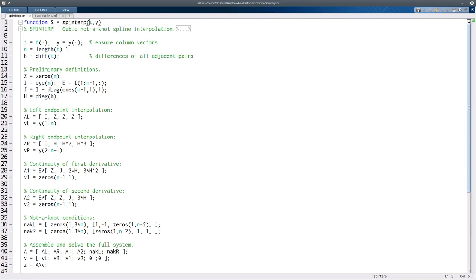But just so you can see the structure of how this works, you're given the nodes and the data at those nodes. n is one less than the number of nodes, so from there we're going to build a linear system of size 4n by 4n for the cubic coefficients in each interval.